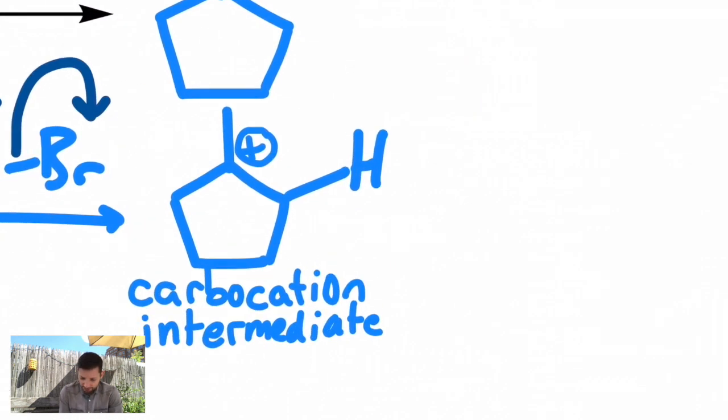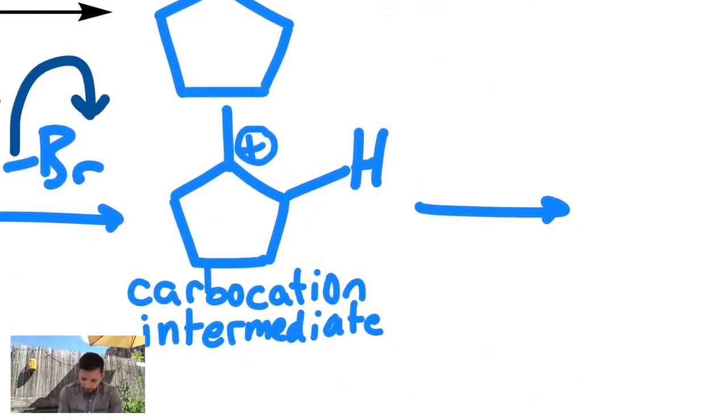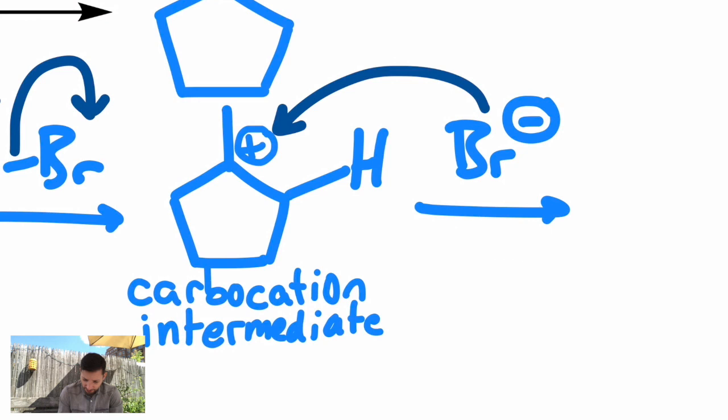As a result, the bromide, which is now floating around in solution, sees this carbocation, and it forms a bond. Draw an arrow from that bromide to the plus charge, and there's your product.